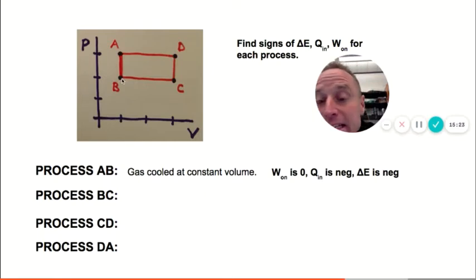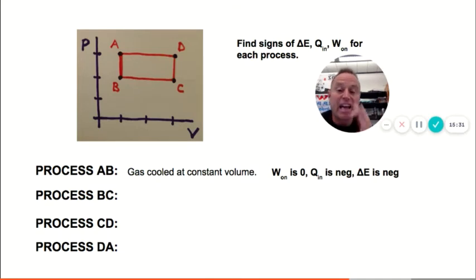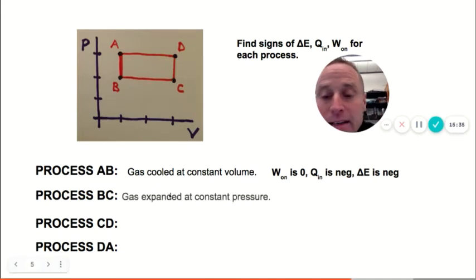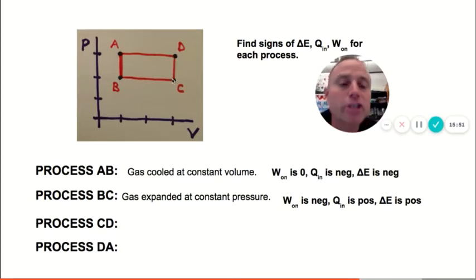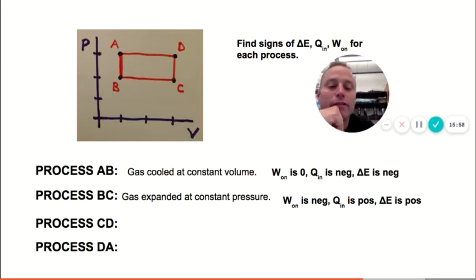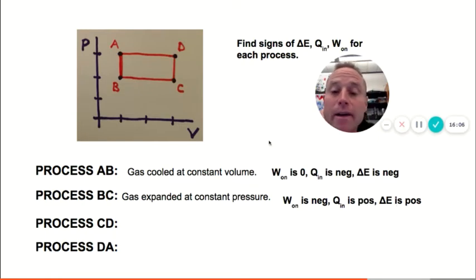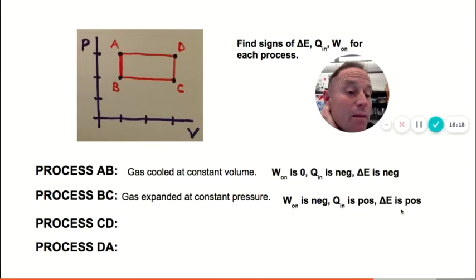B to C: the volume is growing — an expansion at constant pressure. Work on the gas is negative because it's growing against the environment. The gas expanded but the pressure didn't drop — that's unusual, so somebody must be holding a flame under it — Q in is positive. The product of PV went from one times two, or two, up to three times two, or six. So temperature went up and delta E is positive.